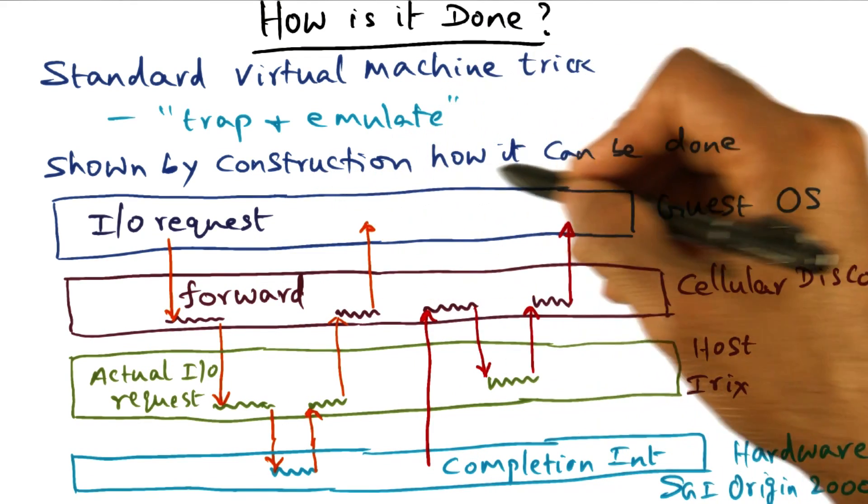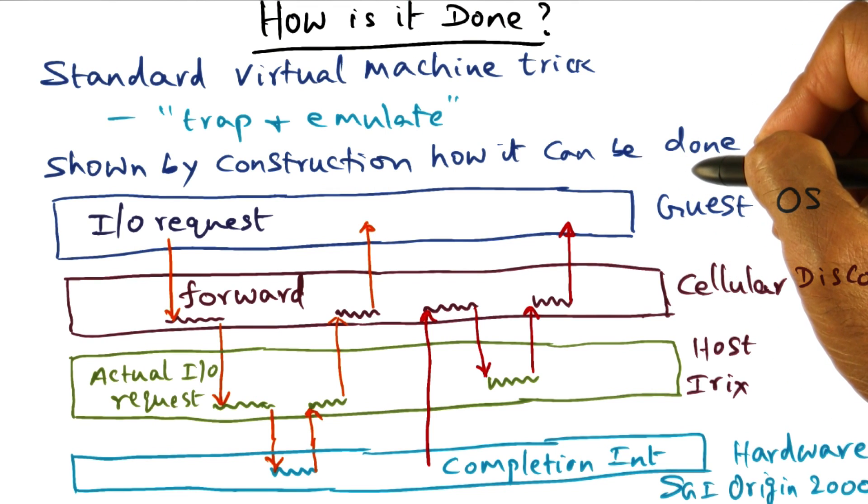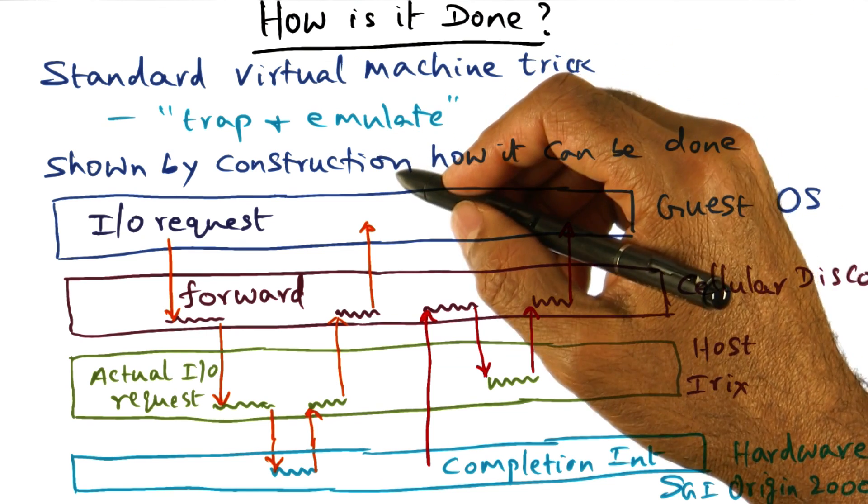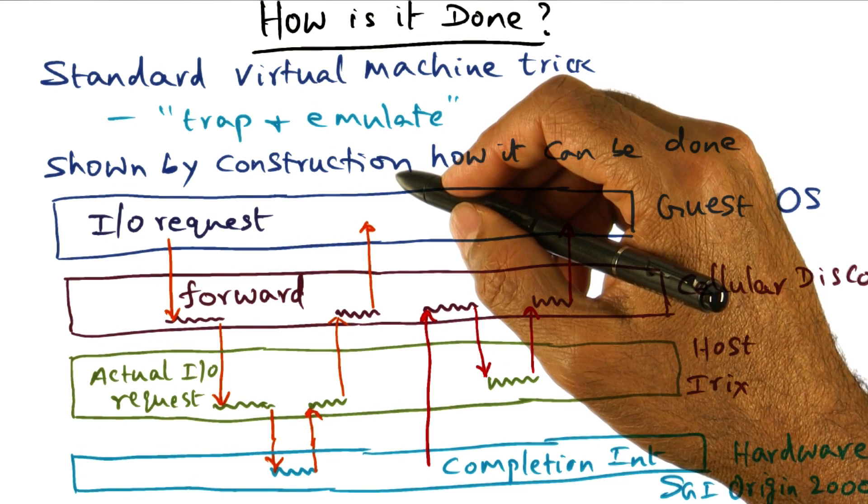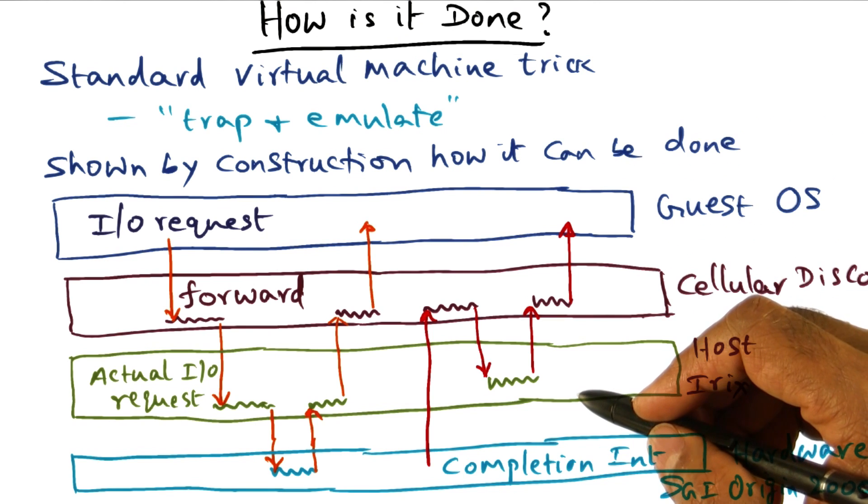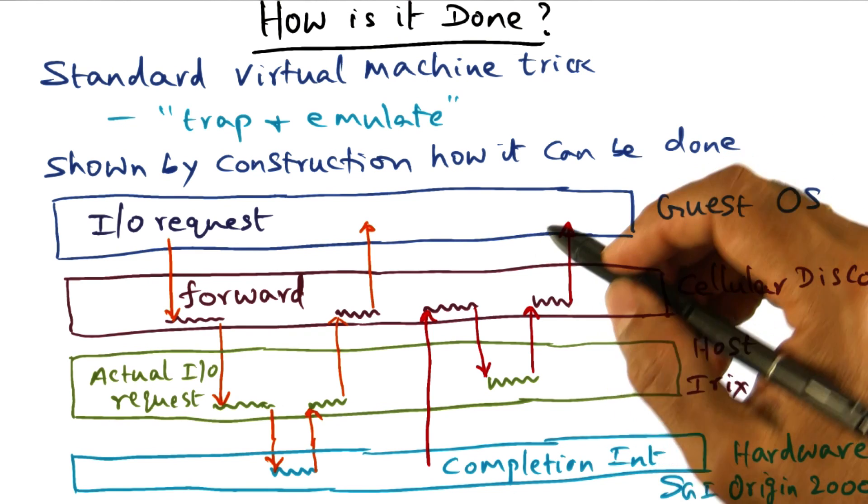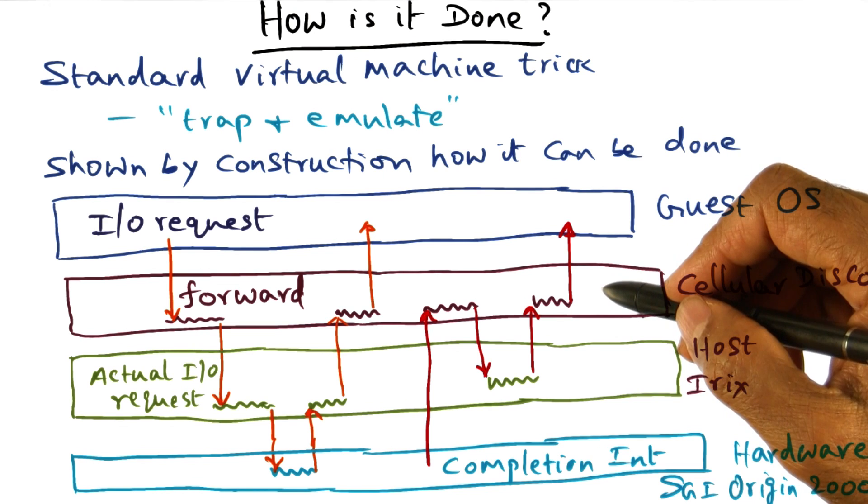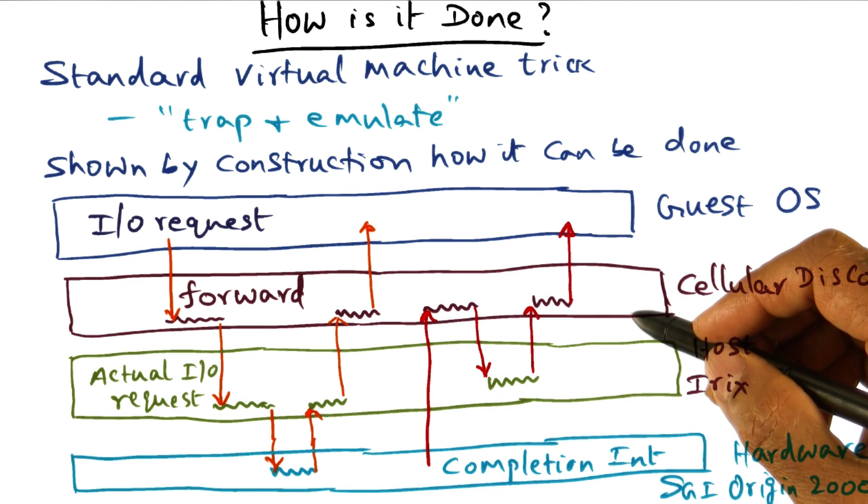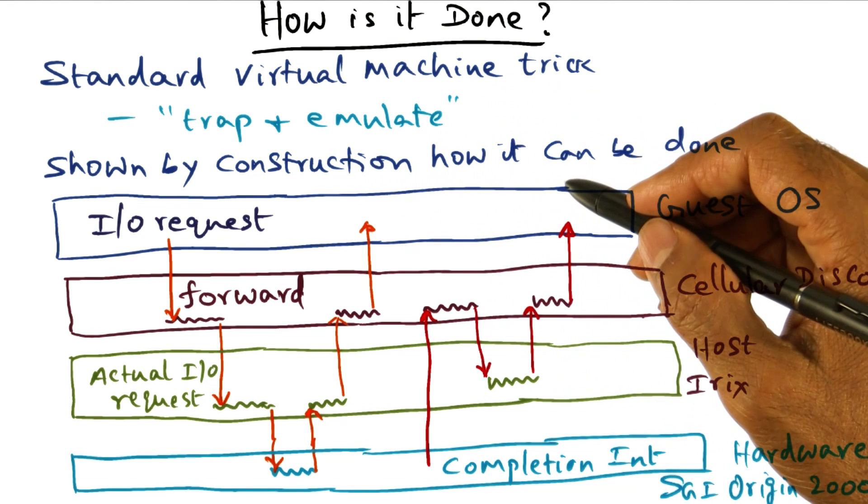Once again, this should remind you of another thing we've seen before when we discussed operating system structures, and that is L3 case showing by construction that a microkernel design can be as efficient as a monolithic design. Similar to that, what these folks have done is by construction shown that a virtual machine monitor can manage the resources of a multiprocessor as well as a native operating system.